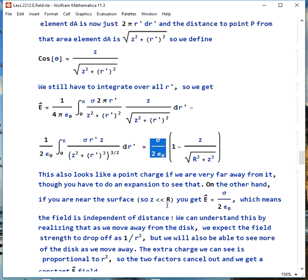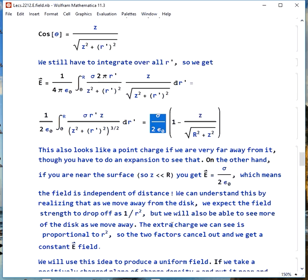The way you can understand this is, as you move away from the disk, you expect the field strength to drop off as 1 over r squared, but you also get to see more of the disk as you go up, just like you would in a helicopter, you get to see more of the earth as your altitude increases. The extra charge we see is proportional to r squared, so that exactly cancels out the drop off of 1 over r squared, and we get a constant e field.